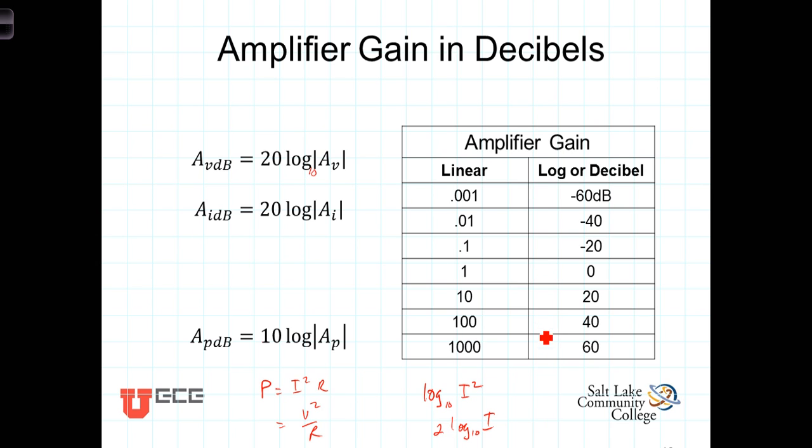You can see here a number of different common gain terms. If you've got a gain of 0.001, if A_v equaled 0.001, in dB that would be negative 60 dB.